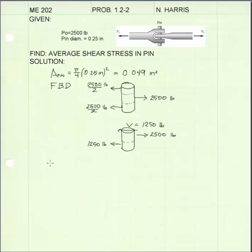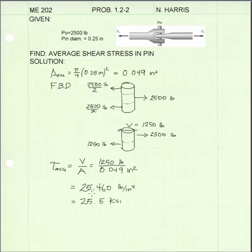The next step is to calculate my average shear stress in the section. The equation for average shear stress is V, that's the internal shear force over the cross sectional area, which is 1250 pounds over 0.049 inches squared. The average shear stress is 25,460 pounds per square inch or 25.5 KSI. That is our answer and our problem is complete.